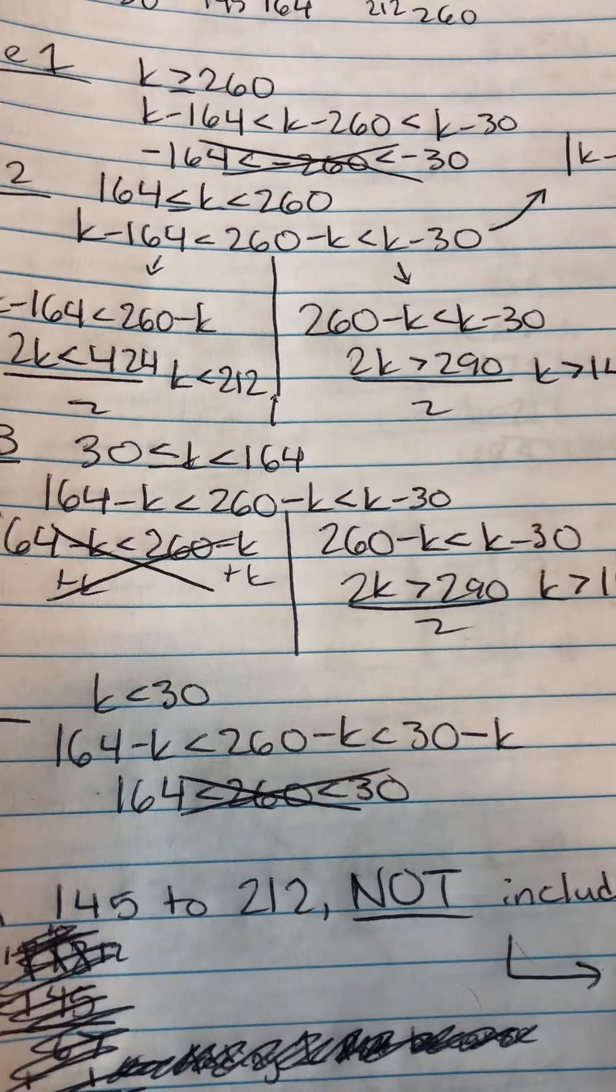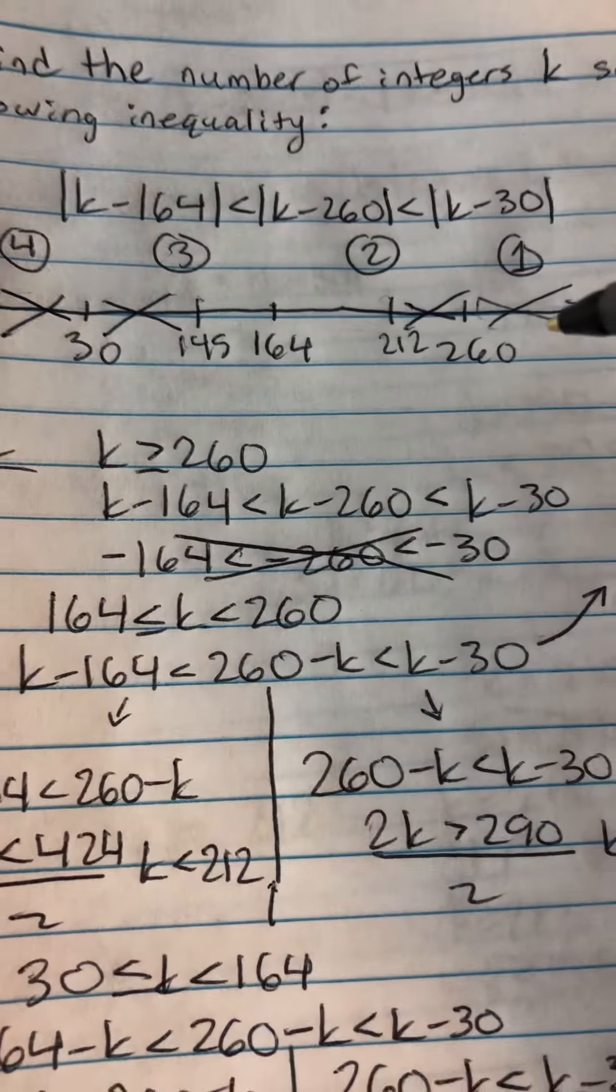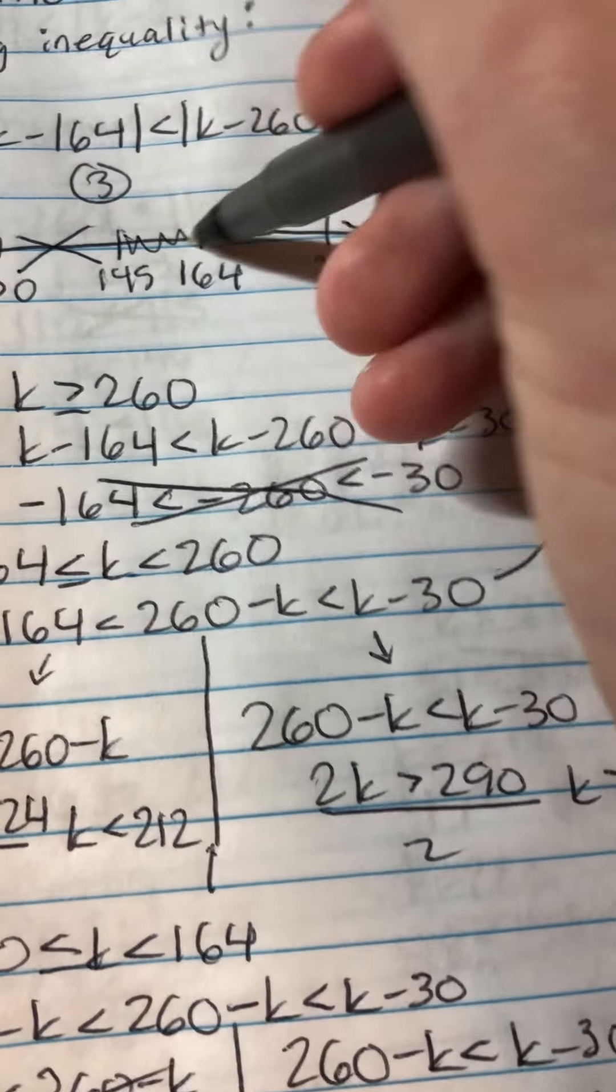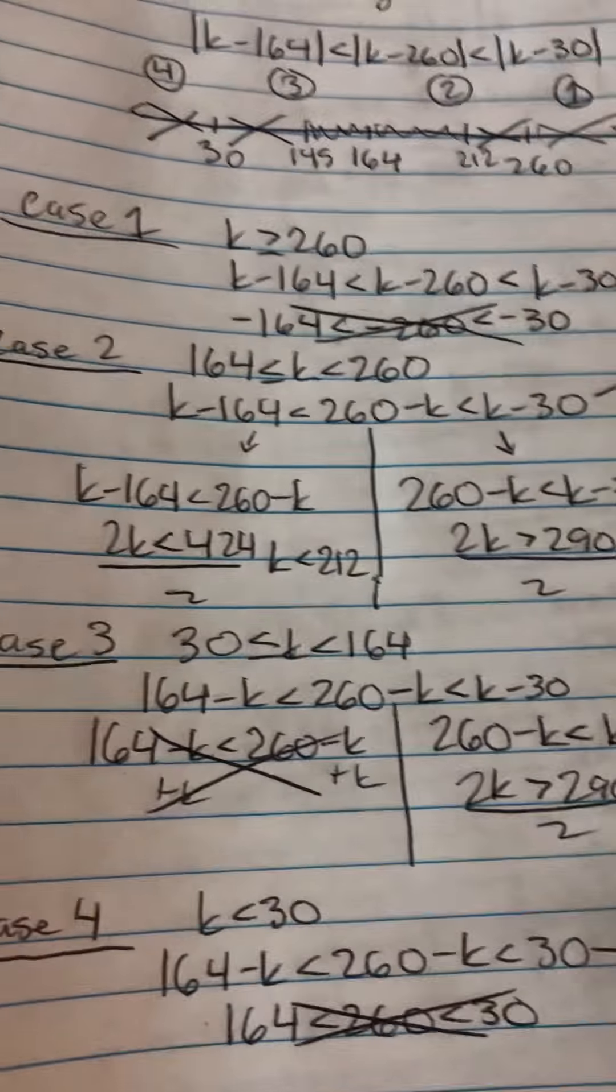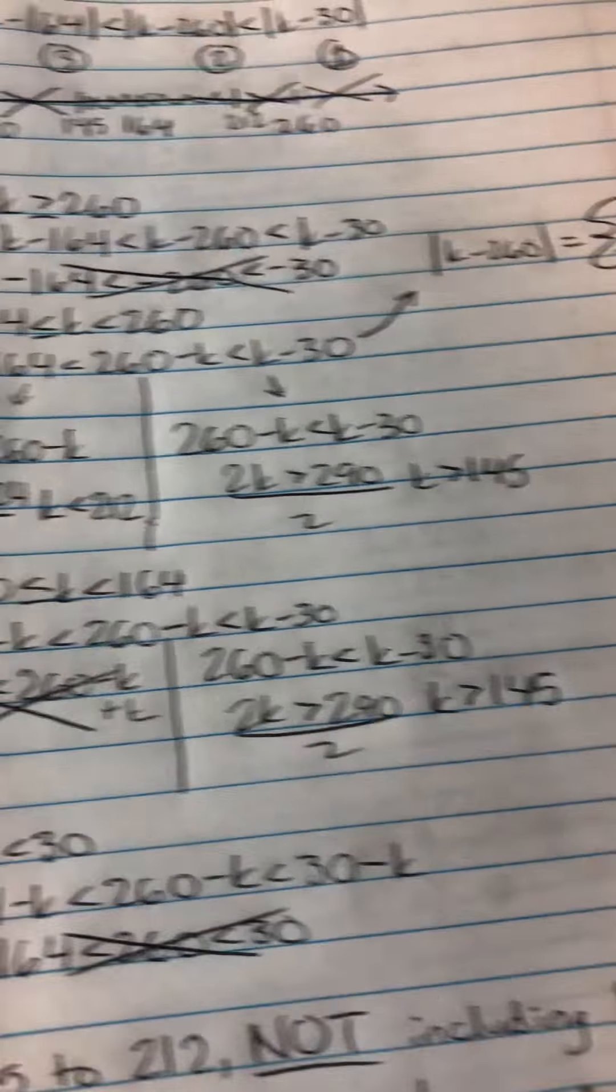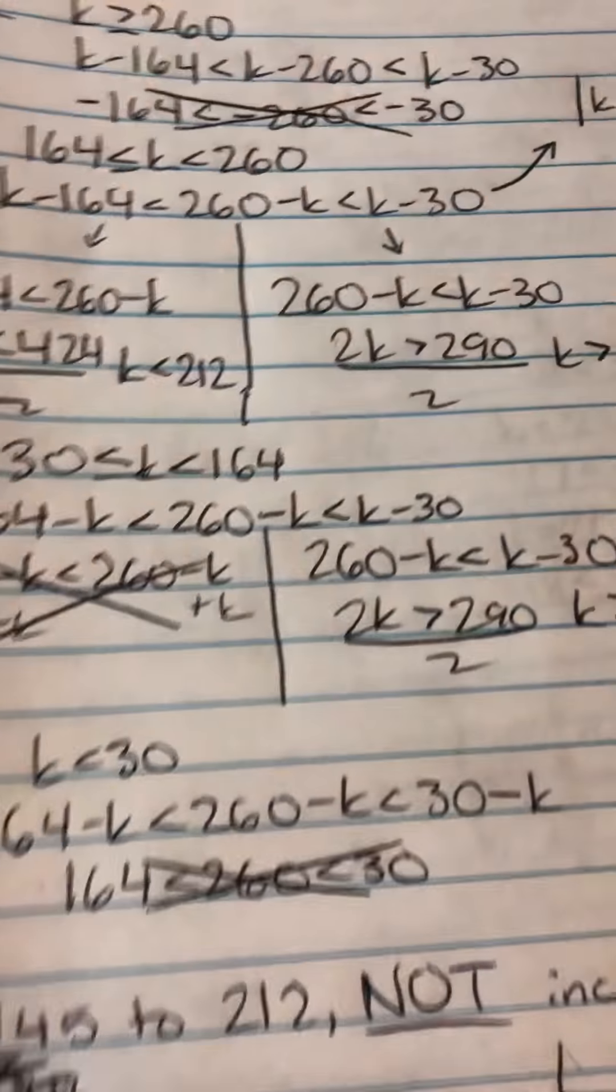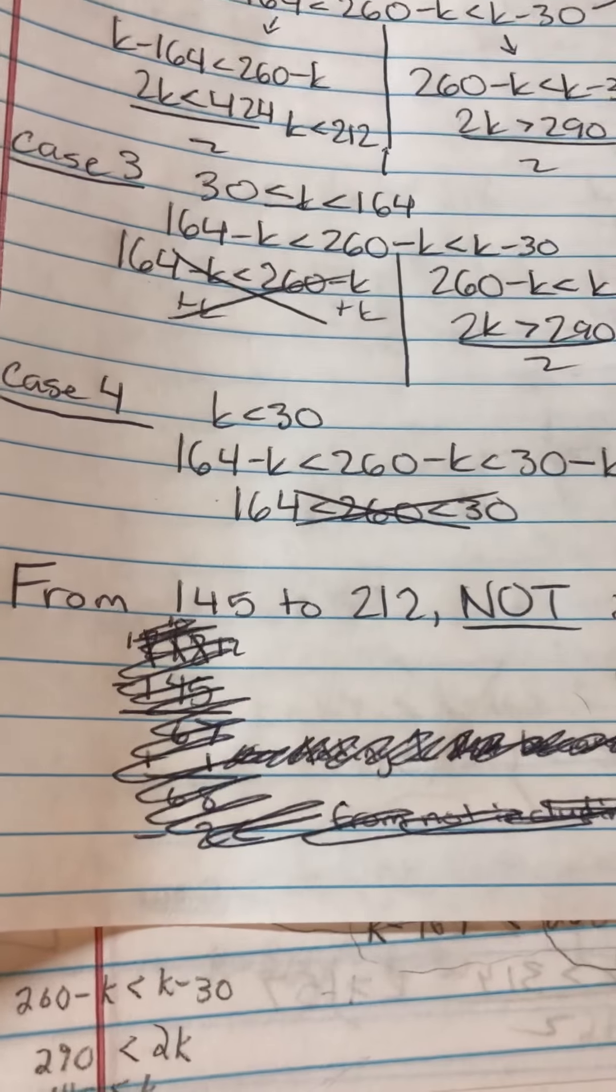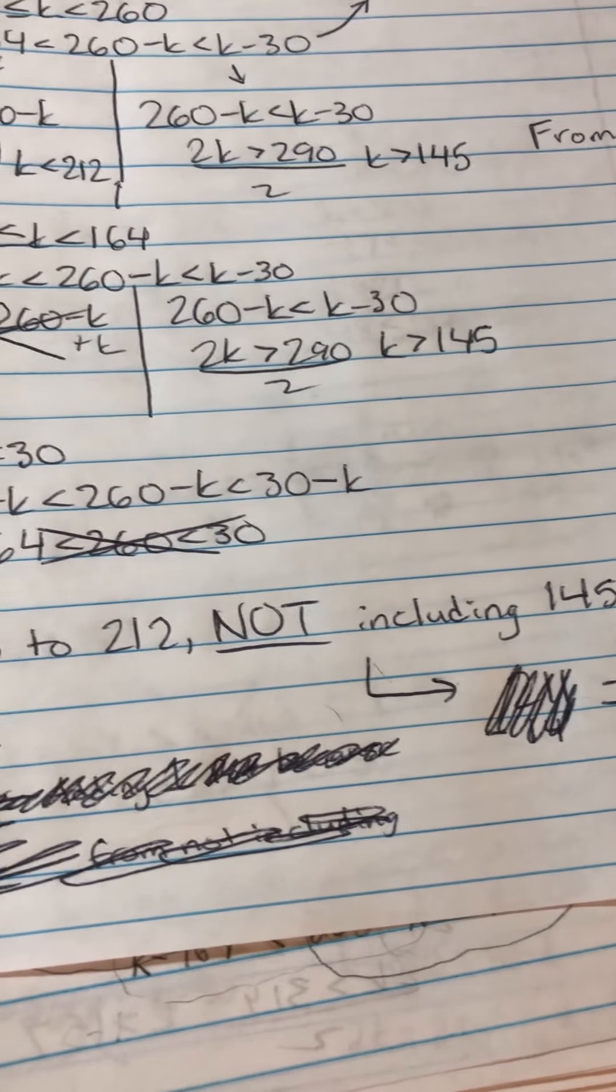So we can tell by all of this, case 4 doesn't work, in between 30 and 145 doesn't work, 212 to 260 doesn't work. So you're just stuck with this zone right here. This is the possible values of k. So pretty much we have from 145 to 212, not including 145 or 212.